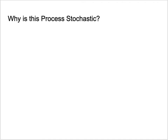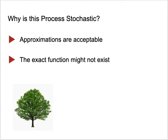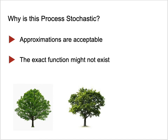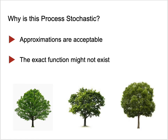Something distinguishes machine learning from typical program synthesis: the synthesis process is essentially statistical. We don't try to synthesize the exact function — approximations are acceptable. This exact function might not even exist. For example, predicting the height of trees as a function of daily temperature, soil nitrogen, and other factors is very unlikely to yield an exact analytical function. It's okay to get a function that just approximates the correct height.